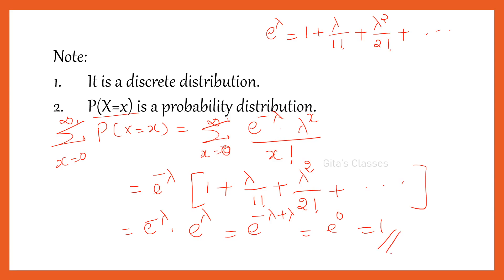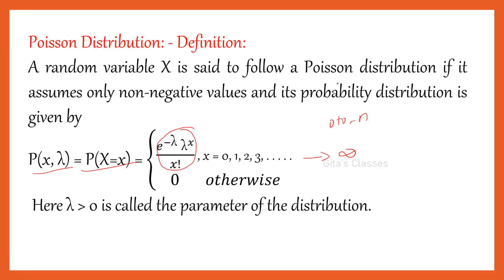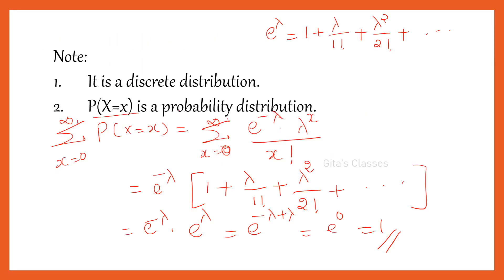We have proved that the total probability equals 1. Also, since e^(−λ) · λ^x with X taking only non-negative values means the function cannot be negative, P(X) ≥ 0. Therefore, this is the probability mass function (PMF) for the Poisson distribution.